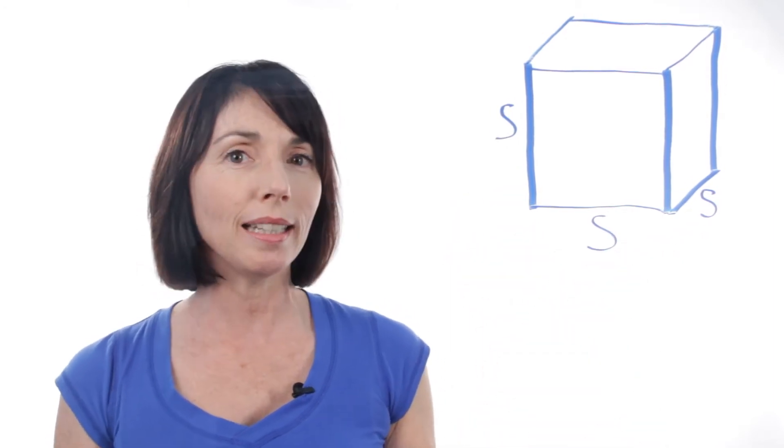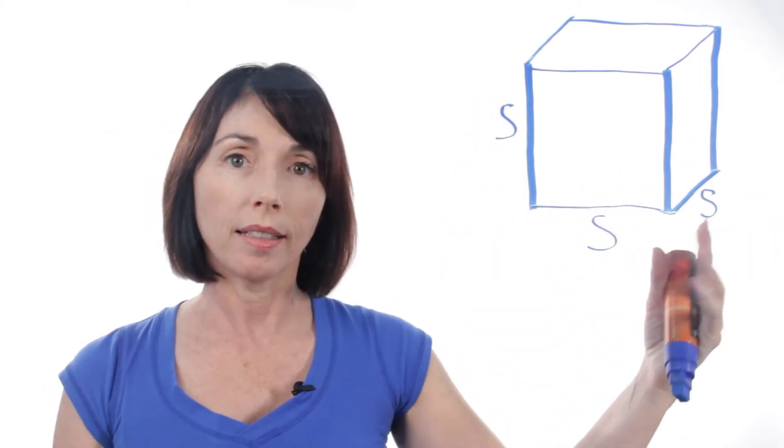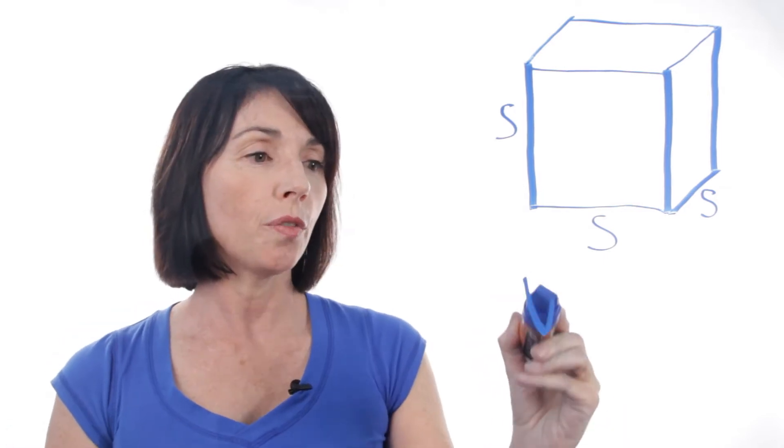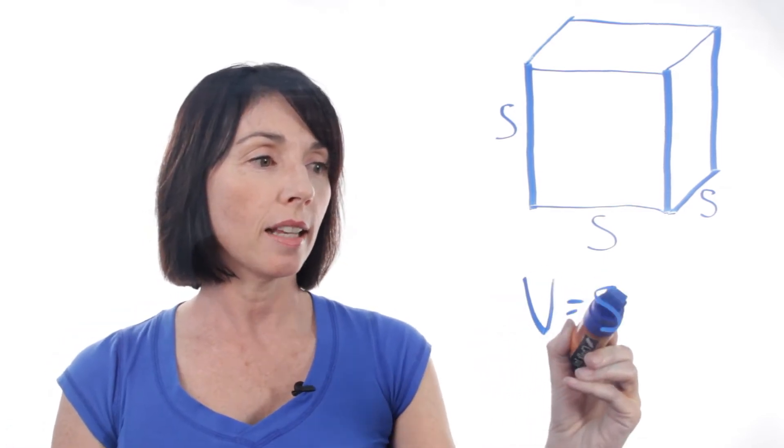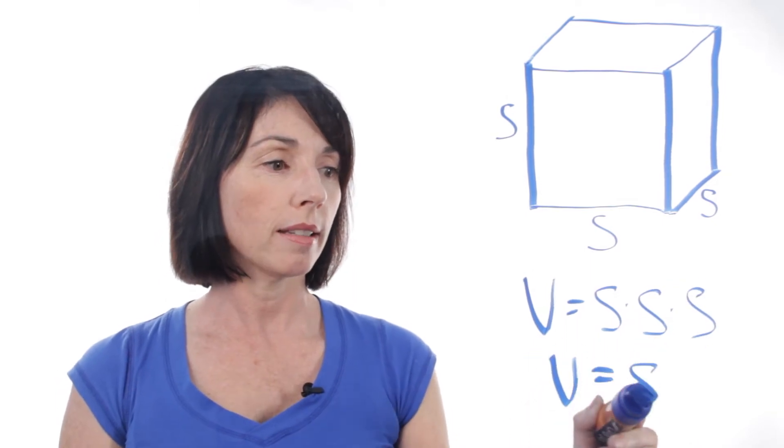Now, the volume formula is pretty easy. It's simply the length times the width times the height. Now, it doesn't really matter for a cube which you call which, because they're all the same. So the volume is just S times S times S, or S cubed.